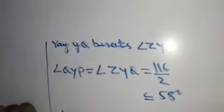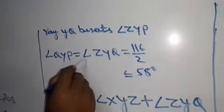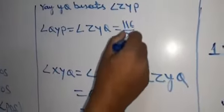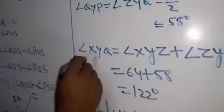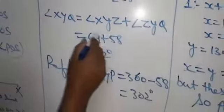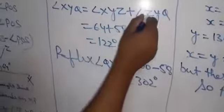Since ray YQ bisects angle ZYP, it has divided ZYP into two equal parts. So angle QYP is equal to half of angle ZYP, which equals 58 degrees. Now finding angle XYQ: angle XYQ is equal to angle XYZ plus angle ZYQ, which is 64 plus 58, giving 122 degrees.